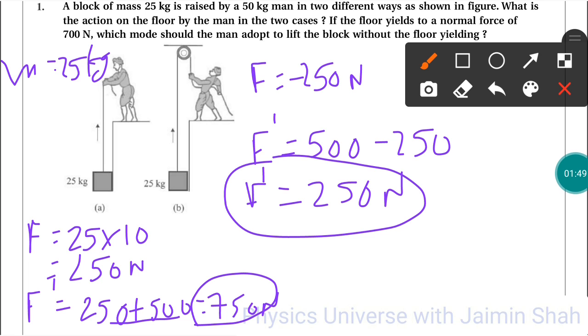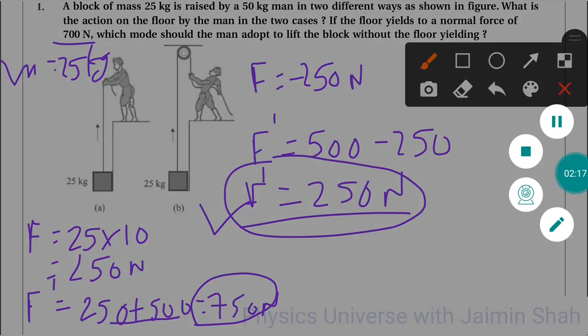First case 750, which is greater than 700, so it is not so good for the string. String will be cut. That's why second force is only giving 250 Newton, which is very less than 700, so second method is very good for the string. Second mode should the man adopt to lift the block without the floor yielding.